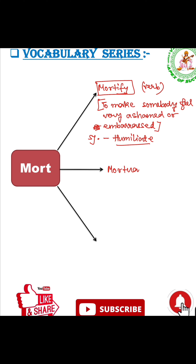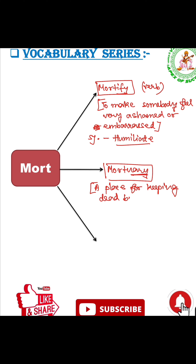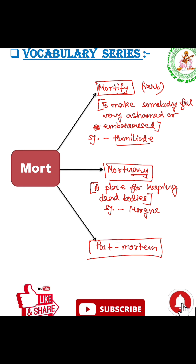Next is 'mortuary'. The suffix '-ary' means place. Mortuary means a place for keeping dead bodies. When we use the root word 'mort' and add a suffix or prefix, we get new words. We have already seen post-mortem. Its antonym is ante-mortem.